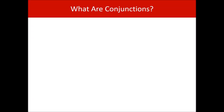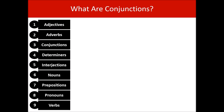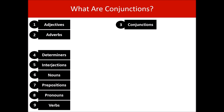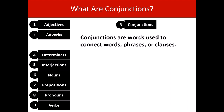What are conjunctions? Conjunctions are one of the nine parts of speech. Here's a definition: conjunctions are words used to connect words, phrases, or clauses.